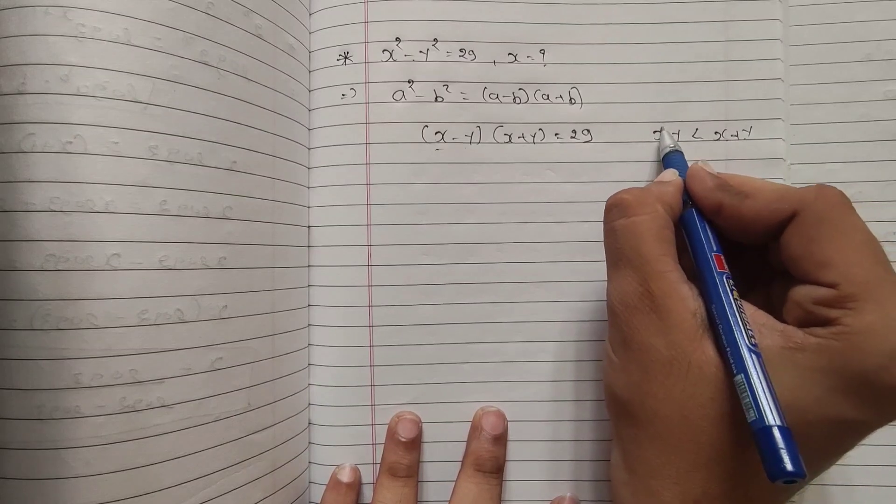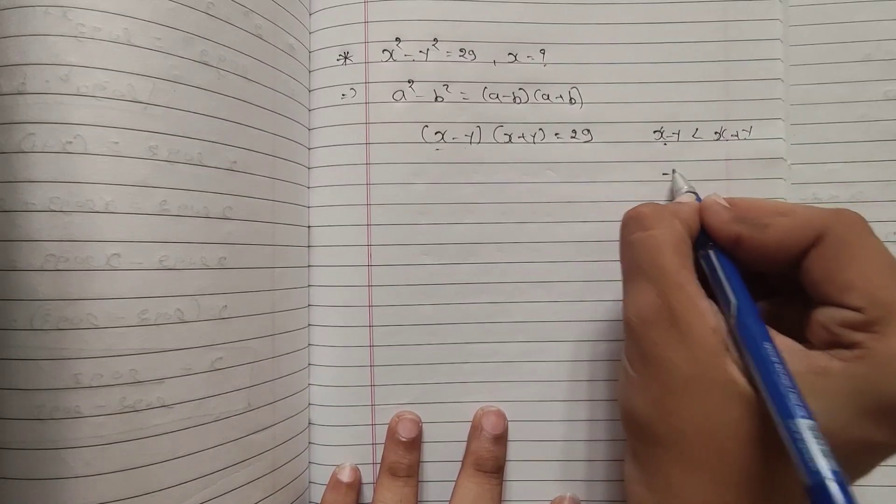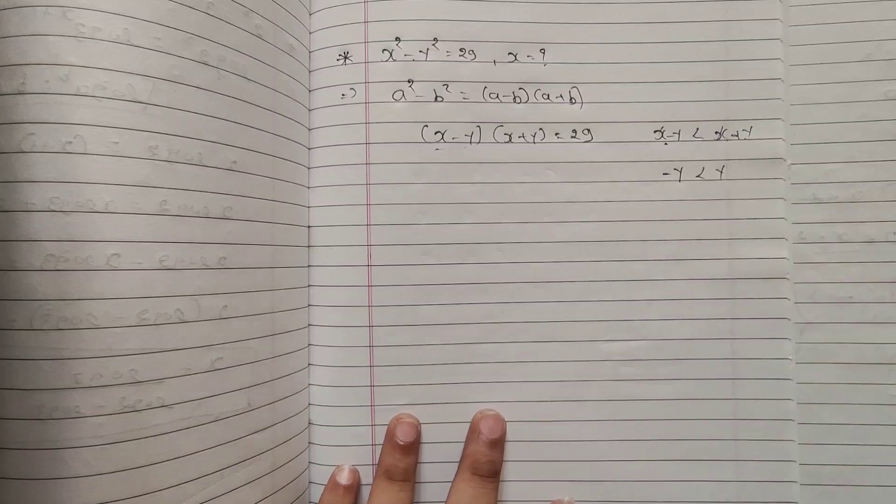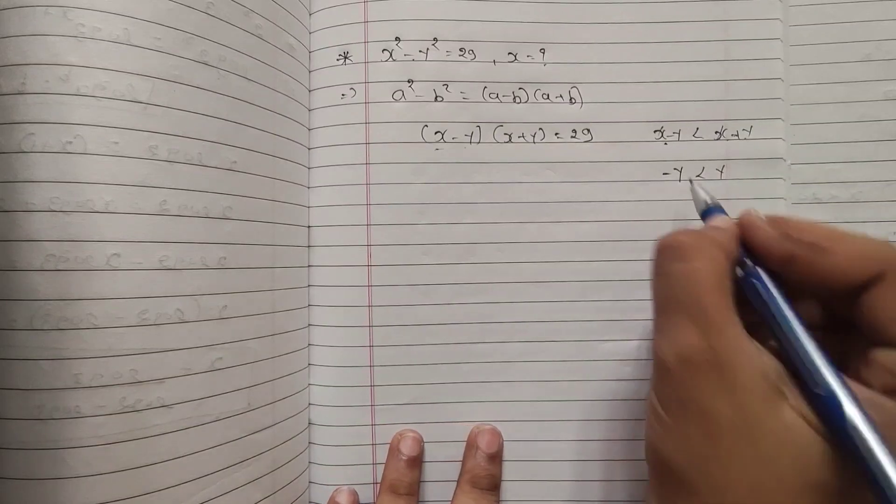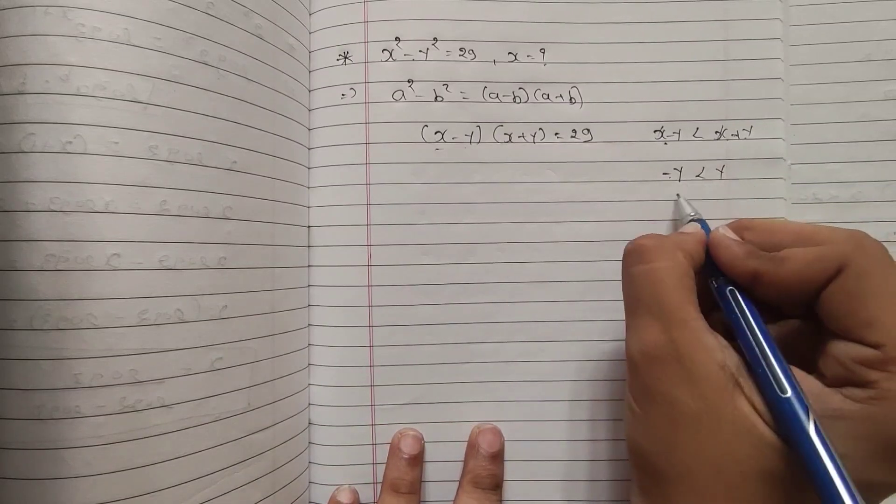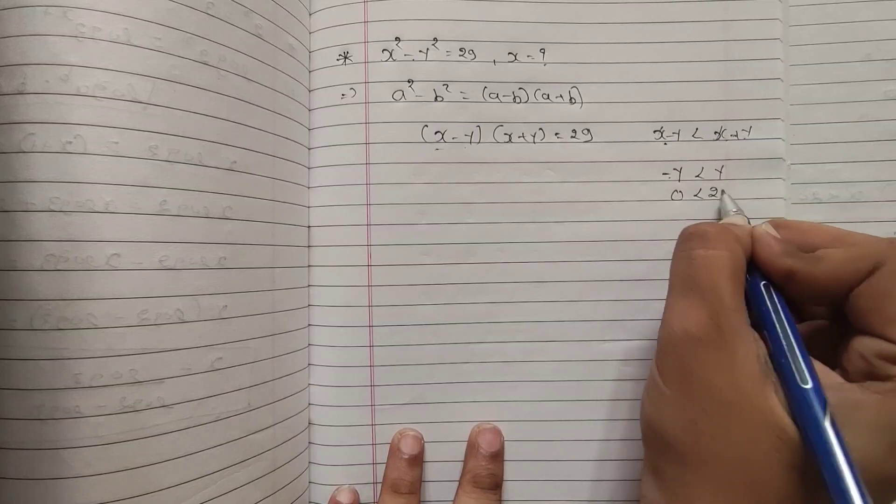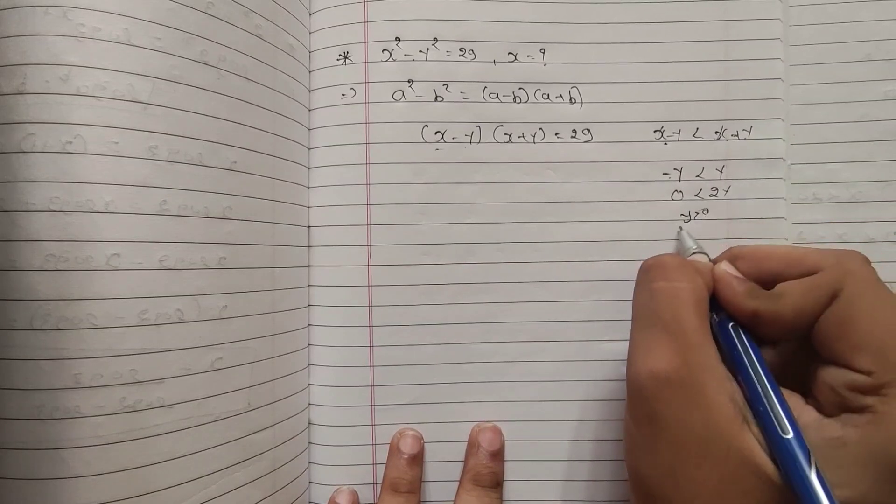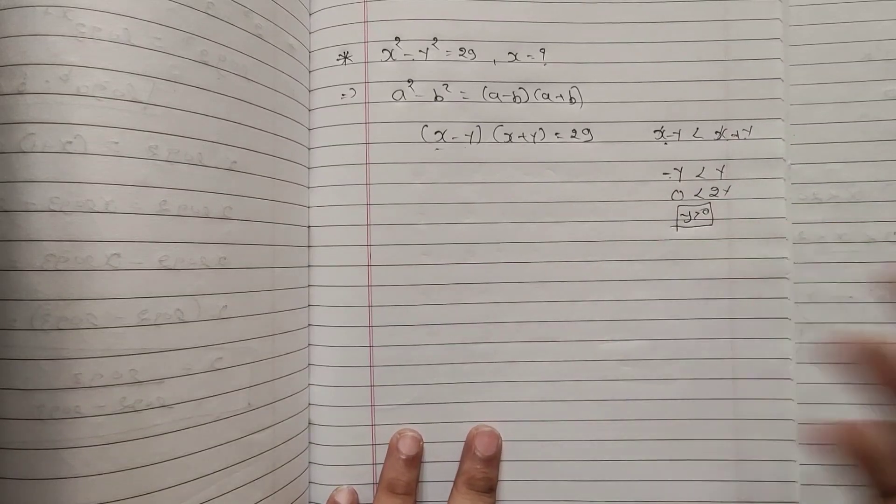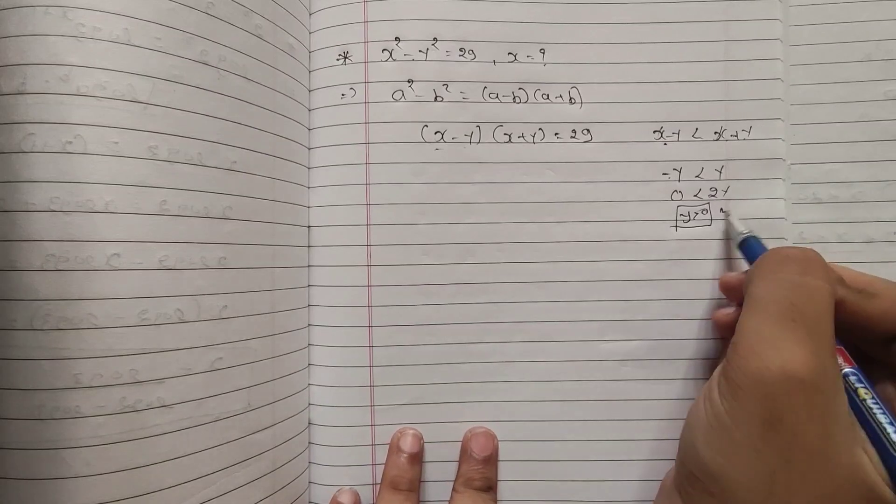So now from this, if I cancel out x and x, what will remain? Minus y less than plus y. So now if I bring minus y to right hand side, it will become 0 less than 2y which means y greater than 0. This is the condition that we need.